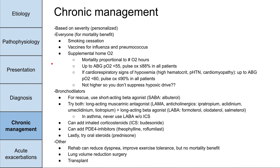Now, how do we chronically manage COPD? A lot of treatments are based on severity. For everyone, there are three things with mortality benefits: stop smoking if they are smokers; make sure they get vaccines for influenza and pneumococcus; and supplemental home oxygen. The mortality benefit is proportional to the number of oxygen hours — the more hours of oxygen, the better. But you don't want to give too much oxygen so you don't suppress their hypoxic drive.